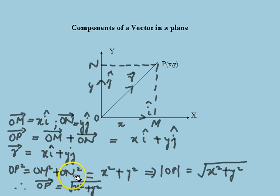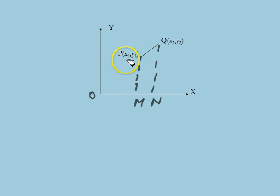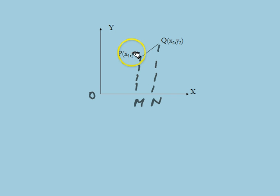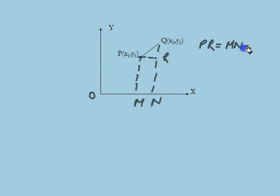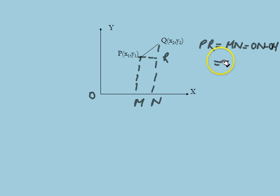Next we consider two points P and Q having coordinates x1, y1 and x2, y2 respectively. We draw PM perpendicular to Ox and another line QN perpendicular to Ox. After that we draw a line PR perpendicular to NQ. Thus we have line PR as shown. Then PR equals MN which equals ON minus OM. Since ON equals x2 and OM equals x1, substituting these values we have PR equal to x2 minus x1.